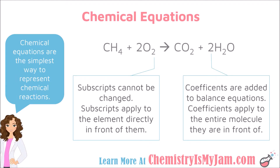Chemical equations are the simplest and most common way to represent a chemical reaction. The equation tells you what atoms are present — every capital letter is a new atom. They tell you the arrangement of atoms, and every space indicates a separation between two molecules. For this reaction, you have methane molecules and oxygen molecules as reactants, and carbon dioxide molecules and water molecules as products.